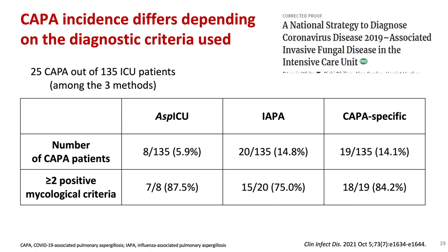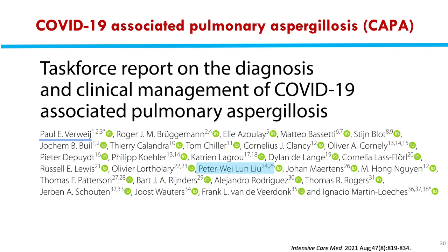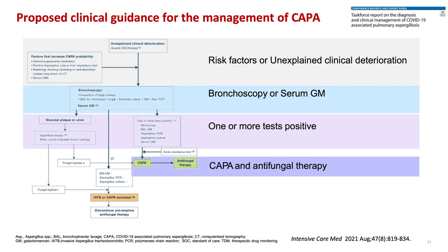Experts published CAPA consensus criteria using unexplained clinical deterioration as an entry criterion. We should perform investigations — including bronchoscopy or serum galactomannan — for those patients. If one or more tests are positive, we should start antifungal therapy. Most importantly, we should obtain specimens — serum, BAL, sputum, or endotracheal aspirate — and do all available tests. If we cannot explain clinical deterioration, we must think of fungal infection.